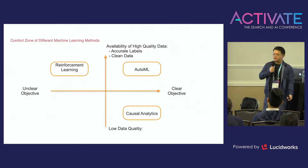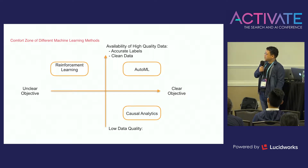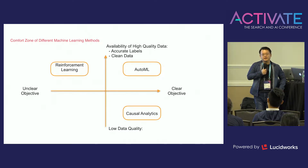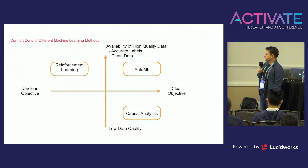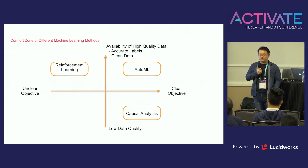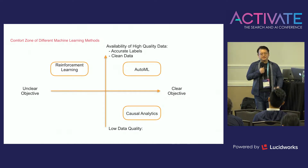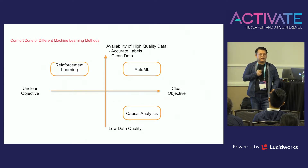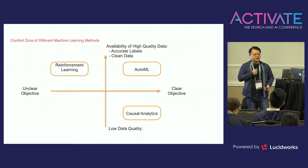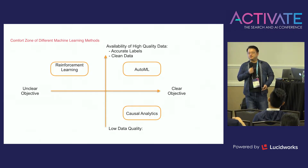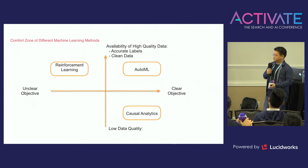The machine can learn the parameters and hyperparameters all by itself. When you have a clear objective but the data quality is very low — you don't have a lot of trustworthy data — then the comfort zone is for causal analytics. The example is trying to predict what I would do if I didn't attend the conference. You have a clear objective, but you will never have high quality training data because it's counterfactual. Since I'm here, you will never know the ground truth label.